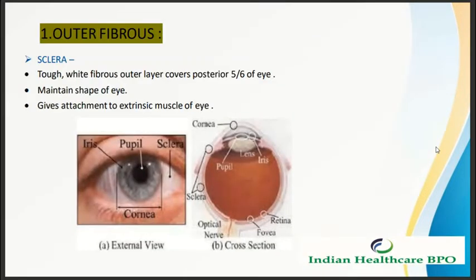The outer fibrous layer consists of the sclera — the tough white fibrous outer layer that covers the posterior 5/6th part of the eye. It maintains the shape of the eye and gives attachment to the extrinsic muscles of the eye.